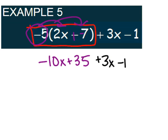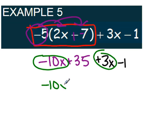After that, we want to group all of our like terms together. So I'm going to look for my variables first, and I have a negative 10x and a positive 3x. So we're going to group those together.